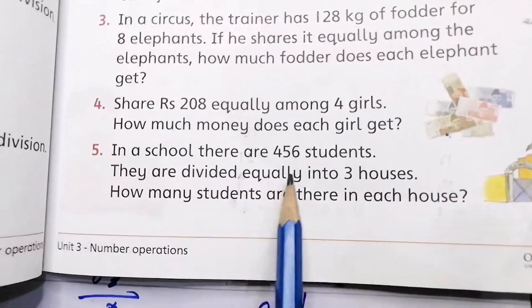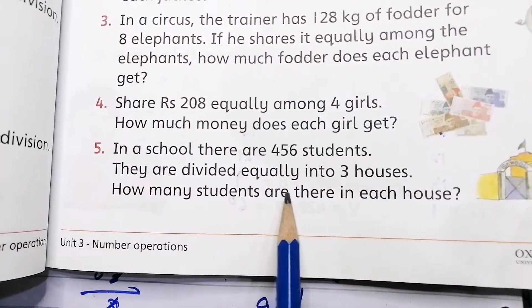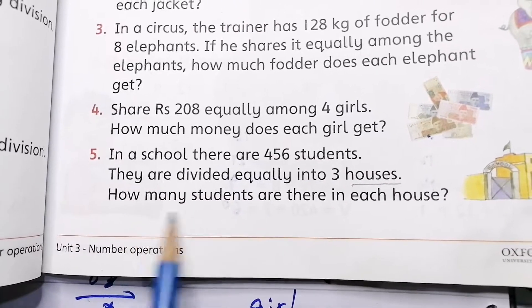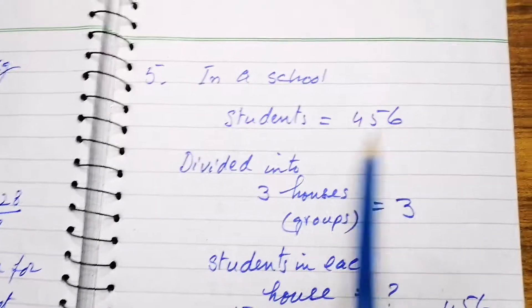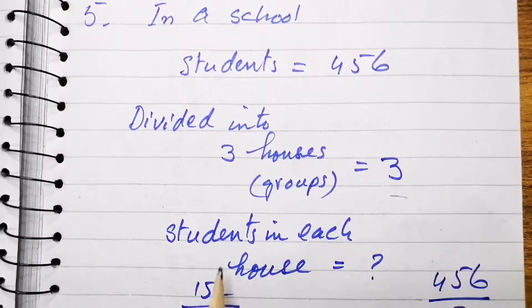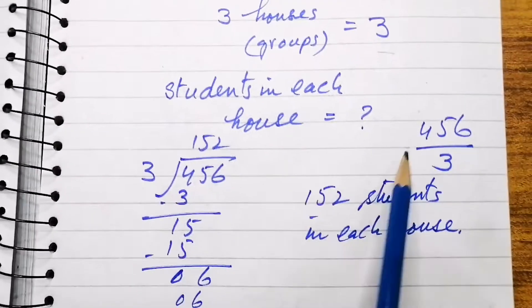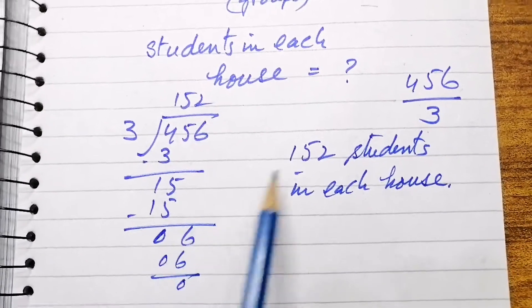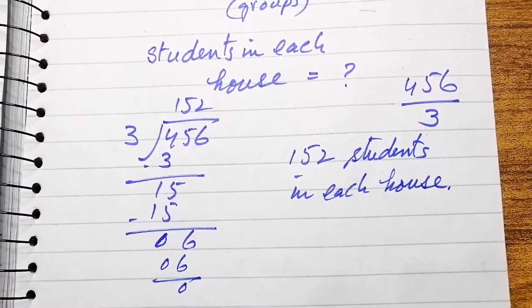In a school there are 456 students. They are divided equally into 3 houses - houses means groups have been made. How many students are there in each house or in each group? In school there are 456 students, divide them into 3 groups. Students in each group or house are 456 divided by 3. By dividing we get 152 students in each house.